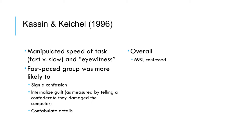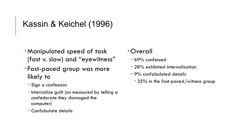Overall, 69% of participants confessed. More than a quarter internalized their confession by believing that they must have hit the key on accident. And surprisingly, 9% told the Confederate details about how they hit the button. Specifically, those in the fast-paced group were much more likely to confabulate details — 35% told the Confederate details about hitting the button, compared to 9% in the slow condition. So just being in the fast-paced condition increased the risk of confabulating details and internalizing guilt.